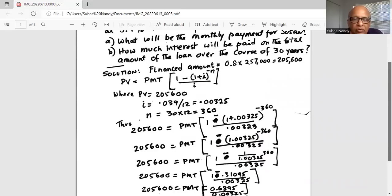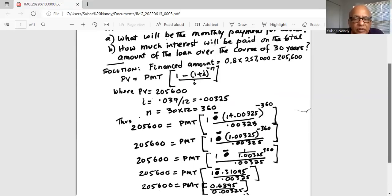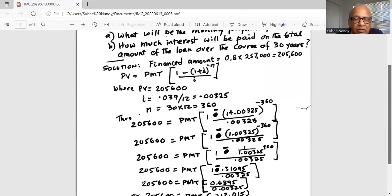The 1.00325 exponent minus 360 can be written as 1 divided by 1.00325 exponent 360. And when we do the calculation in our calculator, that works out to 0.31095.